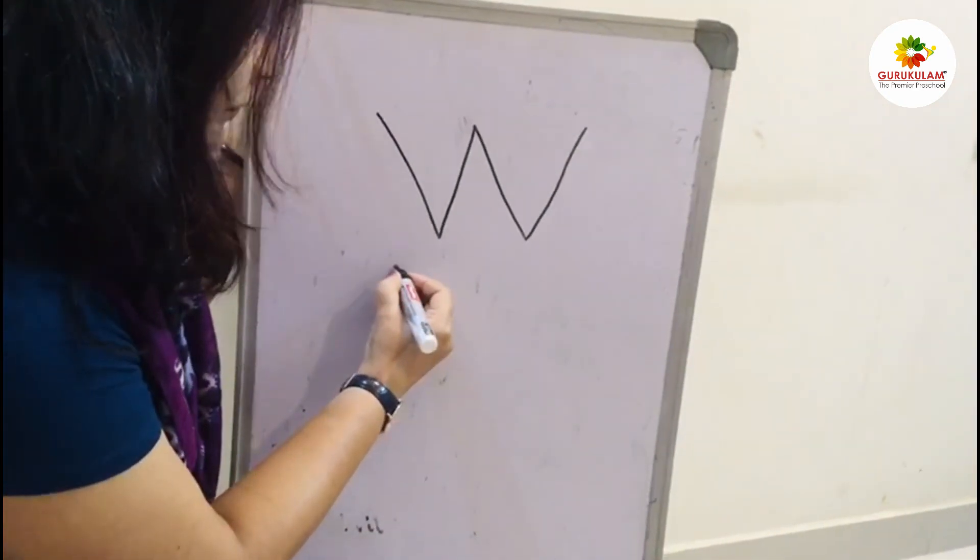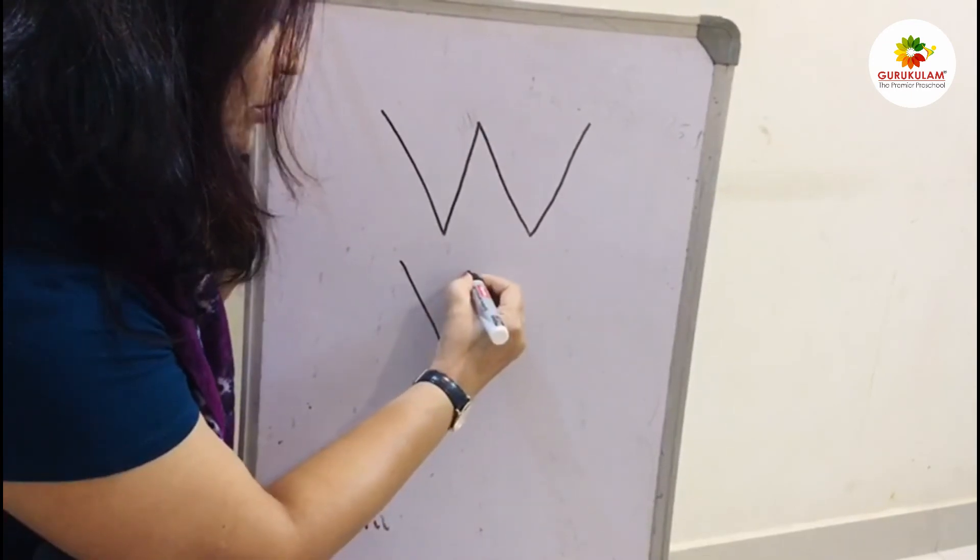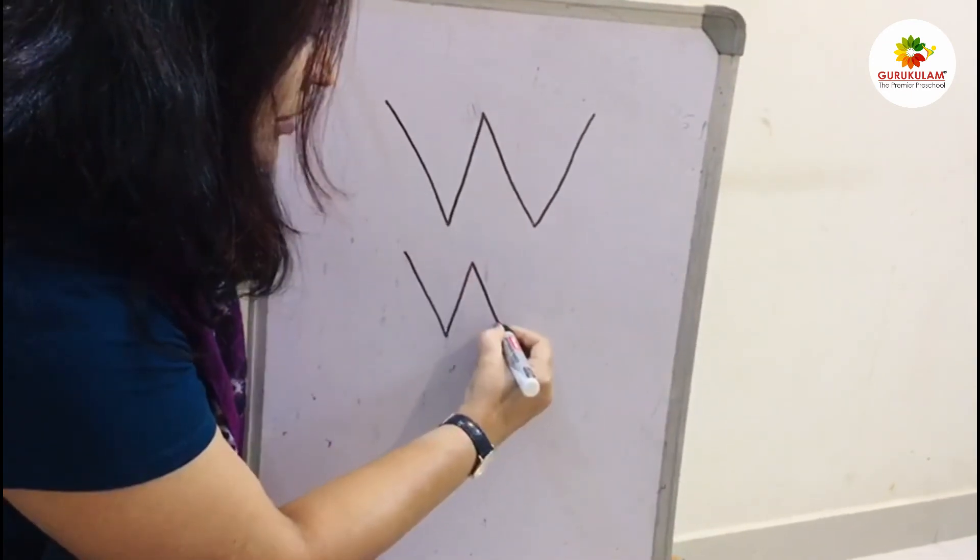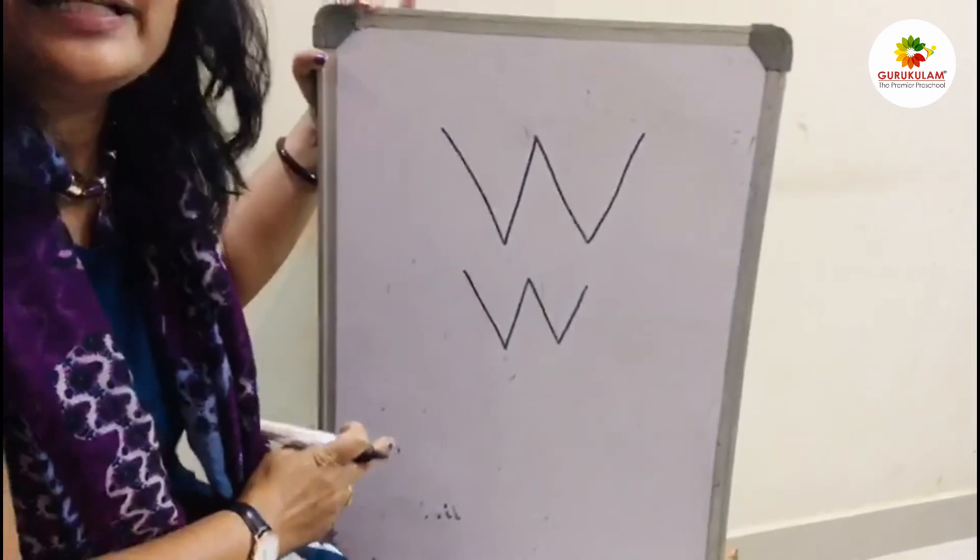One more time I will show you. Up to down, down to up, again up to down and down to up, slanting line. It's W.